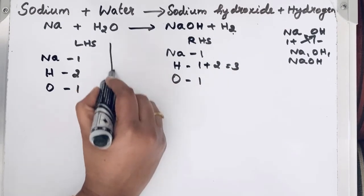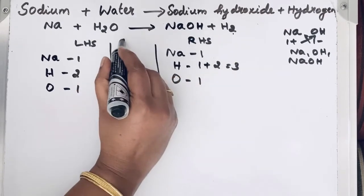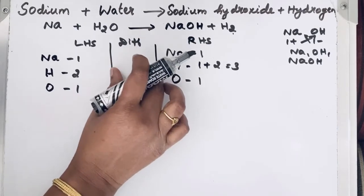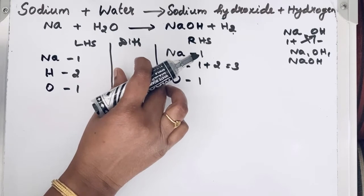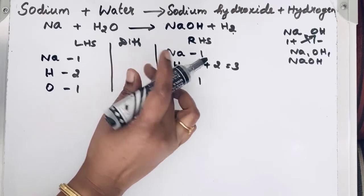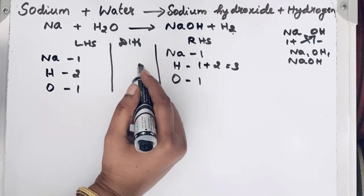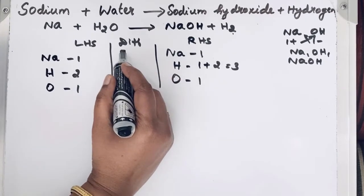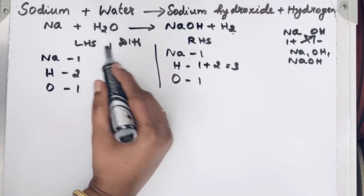Now we go to draw a column and we will write difference. If you write this difference column, you will never ever make mistake for balancing any chemical equations. Here we will write the difference between number of atoms in left hand side and right hand side.